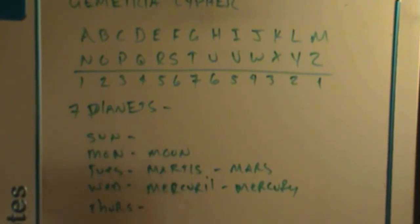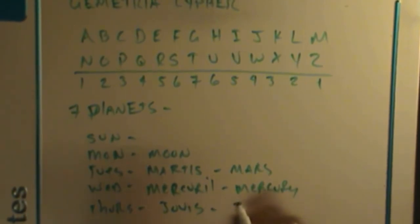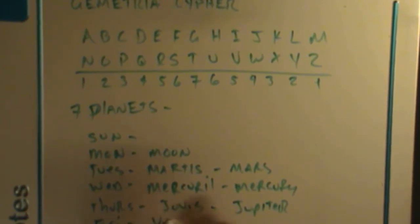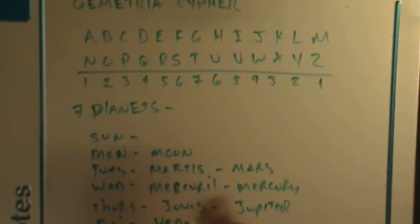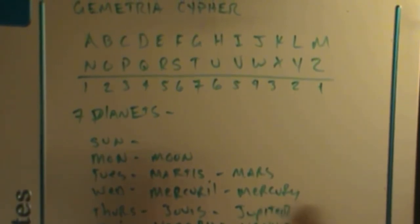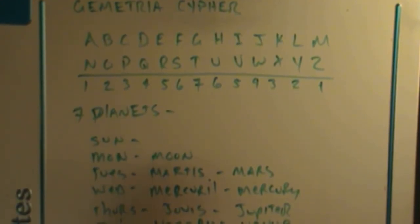Thursday is jovis, which is Jupiter. Friday is viernes in Spanish, but in Latin I believe it's spelled v-e-n-e-r-i-s, which is Venus, the mother goddess. And again back to Eve, this refers to the female obviously. Venus has always been known as the female goddess.